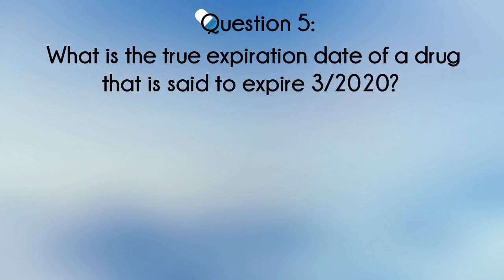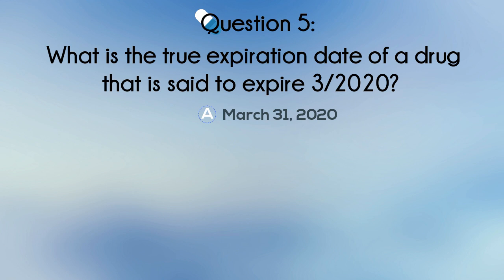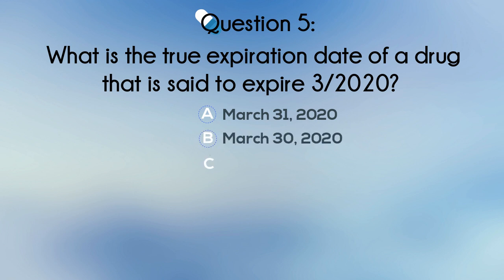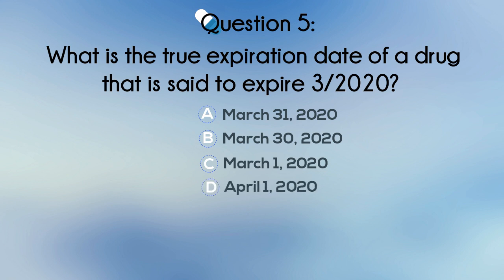Question 5. What is the true expiration date of a drug that is said to expire 3-2020? A. March 31, 2020. B. March 30, 2020. C. March 1, 2020. Or D. April 1, 2020.